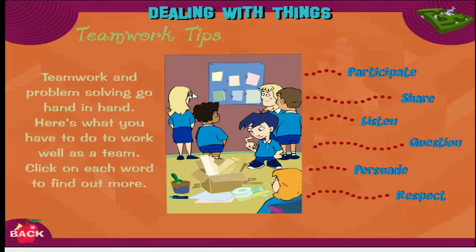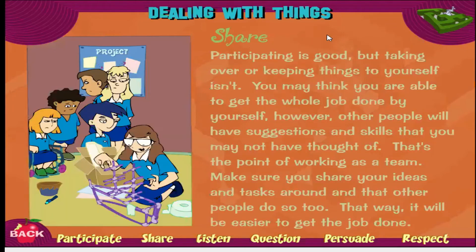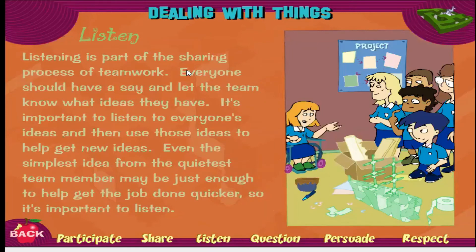Here's what you have to do to work well as a team. First, you have to participate — everyone in your team should contribute towards solving the problem, including you. Just sitting back and letting everyone else do it is not a good idea. Get in there and help everyone achieve the goal. Next, you have to share. Participating is good, but taking over and keeping things to yourself isn't. Other people will have suggestions and skills you may not have thought of — share your ideas and tasks around.